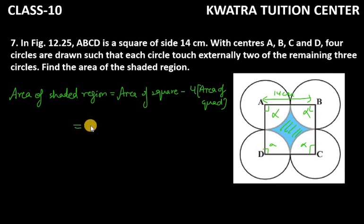So area of square is side into side, which is 14 into 14, minus 4 area of quadrants. It is 90 over 360, into pi r square, 22 over 7, r. How much will it be? Don't take 14 into 14, the radius will be 7. So 7 into 7.